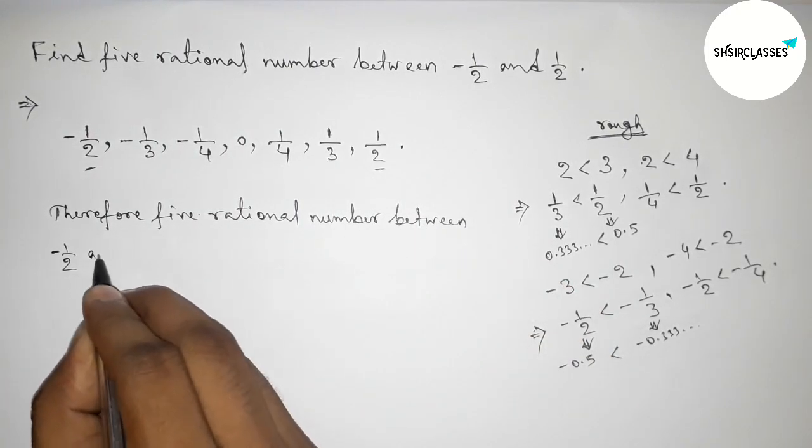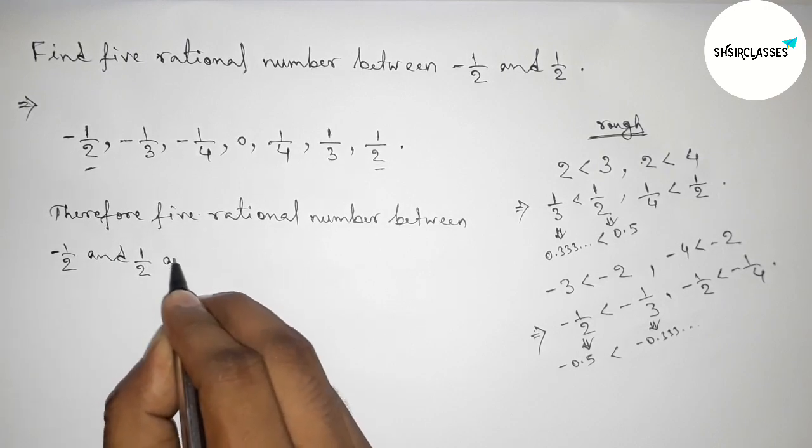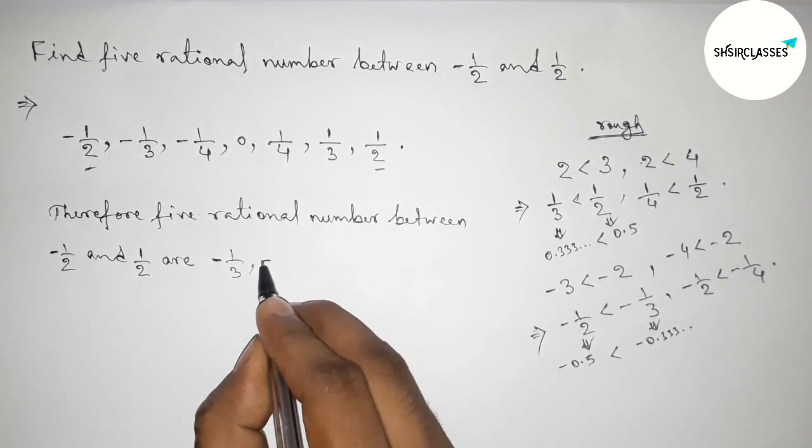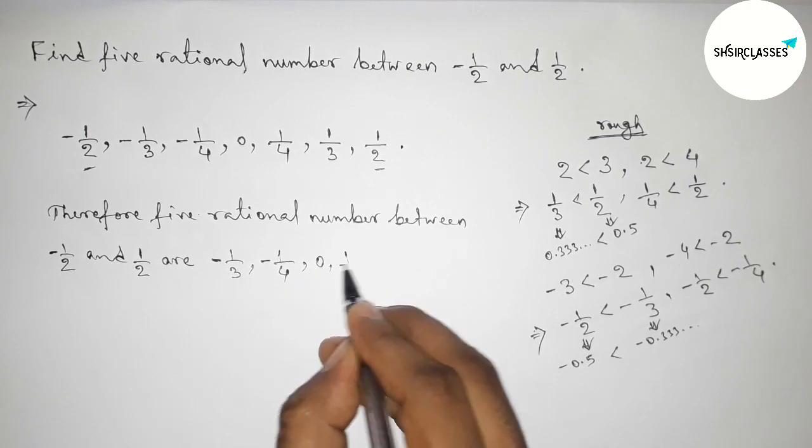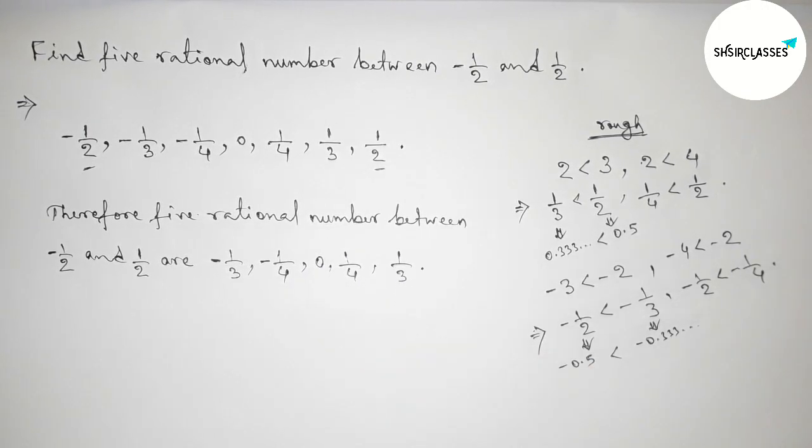Therefore, the required 5 rational numbers between minus 1 by 2 and 1 by 2 are: minus 1 by 3, minus 1 by 4, 0, 1 by 4, and 1 by 3. That's all, thanks for watching.